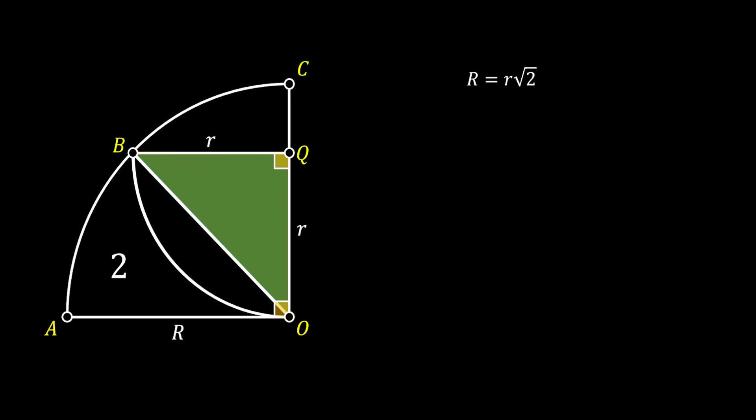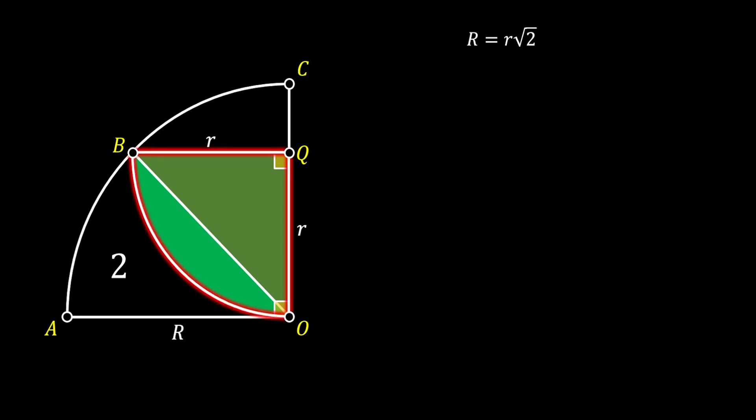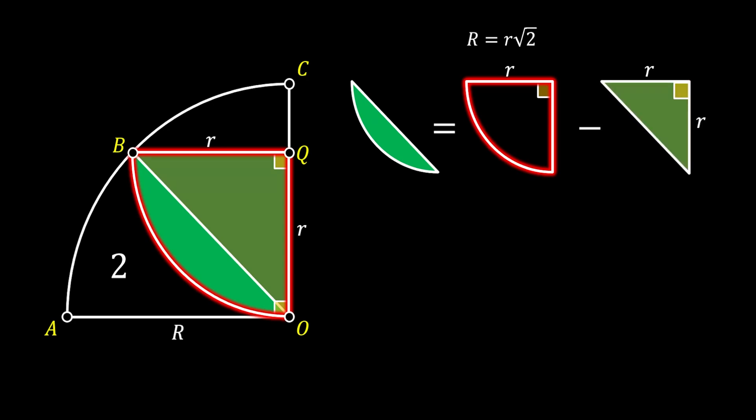And we are going to save this value for later. Now, let's have a look at the small segment in the middle, which I will shade in green. We can notice that this small green segment and our isosceles triangle are both forming our quarter circle BQC.